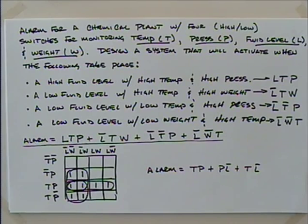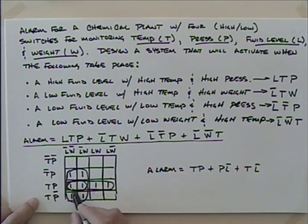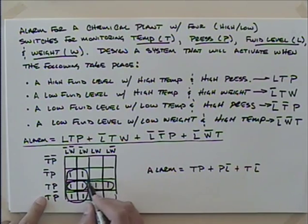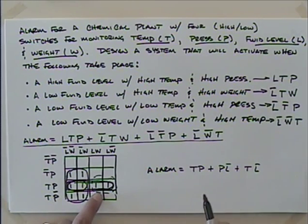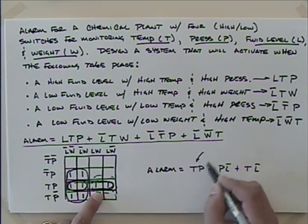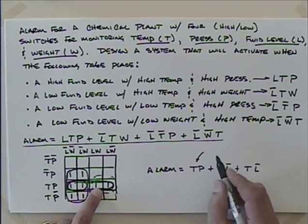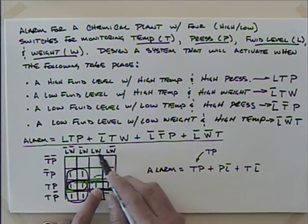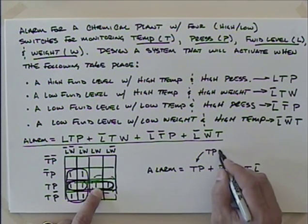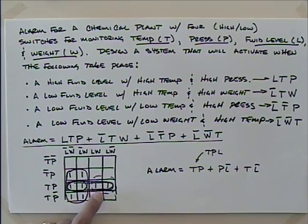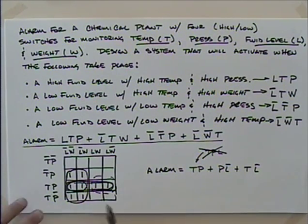Student question: why circle four rather than just two? If you just did two, the term would come up as T·P·L rather than just T·P, so it wouldn't be as simple as it could be. The larger group eliminates a variable, which is the whole point of the Karnaugh map simplification.